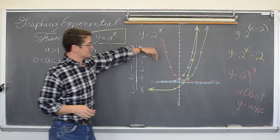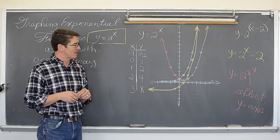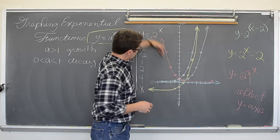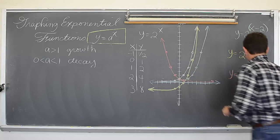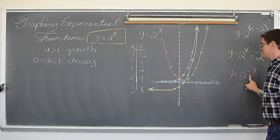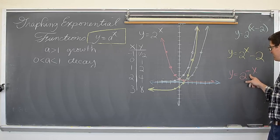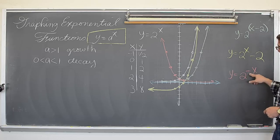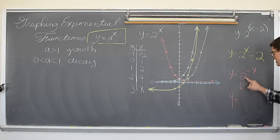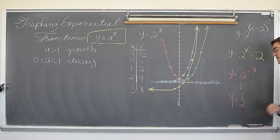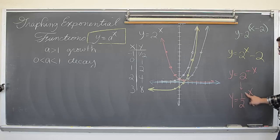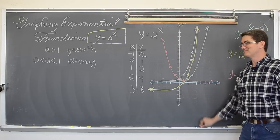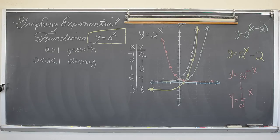That kind of is decay. If I rewrite this equation to get rid of the negative exponent by flipping the base, two to the negative x becomes one half to the x. So I inadvertently did a decay question — I have a base that is between zero and one, and thus it is decay. BAM! Alright, go do your homework. I hope this helped you graph your exponential functions.